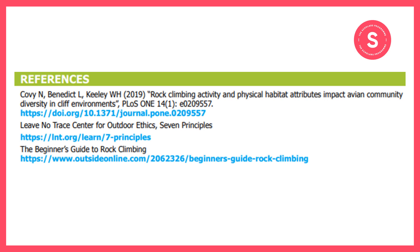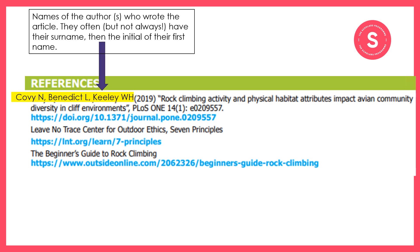This is what the reference list for the article on rock climbing and birds looks like. We can see that there are three references, so we know the author used information from three different sources. The first reference starts with the word Covey and ends with the number 0209557. The part highlighted in yellow refers to the names of the authors. They often have their surname then the initial of their first name — so here we've got Covey N, Benedict L, and Keeley WH. There were three authors of this article.